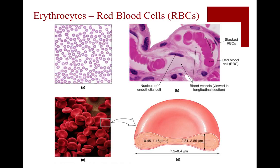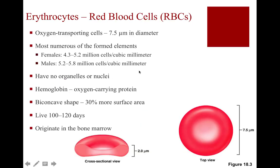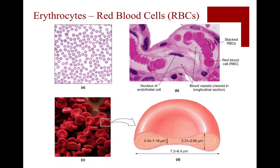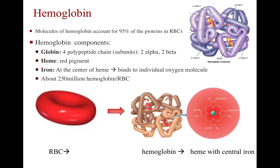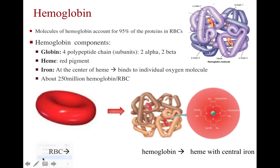Here is a typical picture of red blood cells as seen under a light microscope. Each dot represents one tiny red blood cell. In one cubic millimeter — a really small volume — you have about 5.2 to 5.8 million cells. If you were to take one of these red blood cells and burst it open, you would find that 95 percent of the total mass of the red blood cell is hemoglobin, the protein we are discussing.